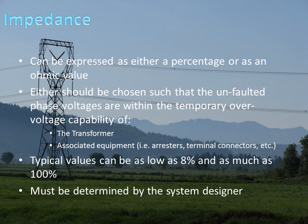Impedance can be expressed as either a percentage or as an ohmic value per phase. Either should be chosen such that the unfaulted phase voltages are within the temporary overvoltage capability of the transformer and associated equipment such as arresters and terminal connectors. Typical values for impedance can be as low as 8% or as much as 100%. Impedance must be determined by the system designer, and the transformer manufacturer needs to be advised at the time of order.